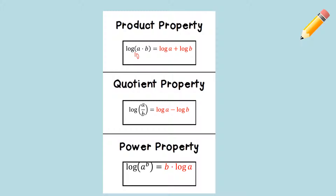And the power property: if we have something getting raised to a power — like log base 10 of A raised to the B power — you can bring that exponent out in front of the log. The first two properties look familiar from exponent properties, but this last one is a little different. If we have something raised to a power, we can bring that power to the front of the log as a number being multiplied to it.